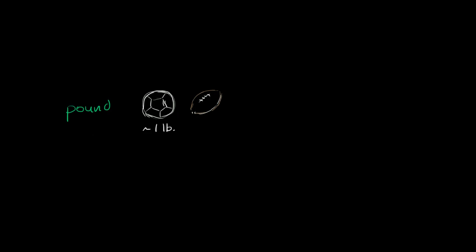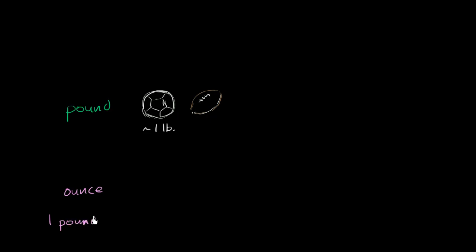If you want to go to scales smaller than a pound, you would think about using the ounce. The relation between the ounce and the pound, when thinking about weight, is that one pound is equal to 16 ounces. Or another way of thinking about it: one ounce is equal to one sixteenth of a pound.